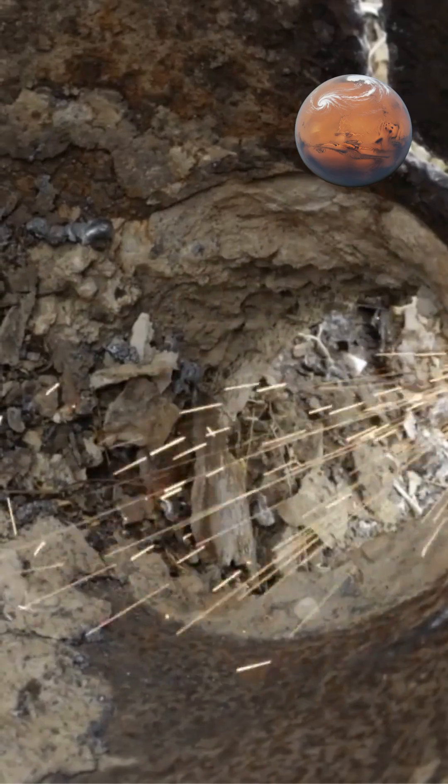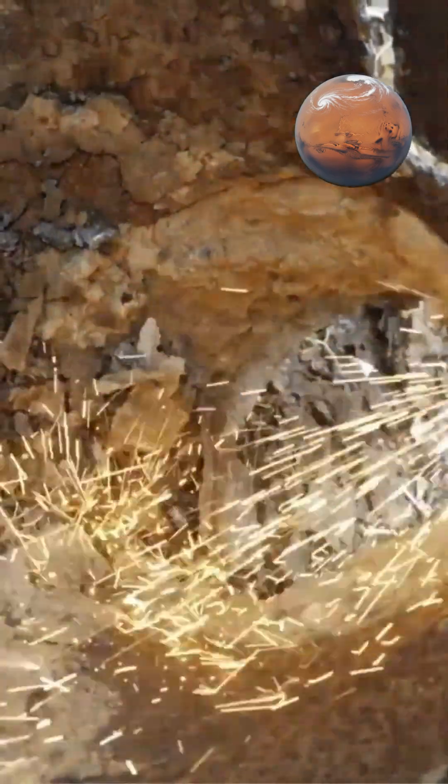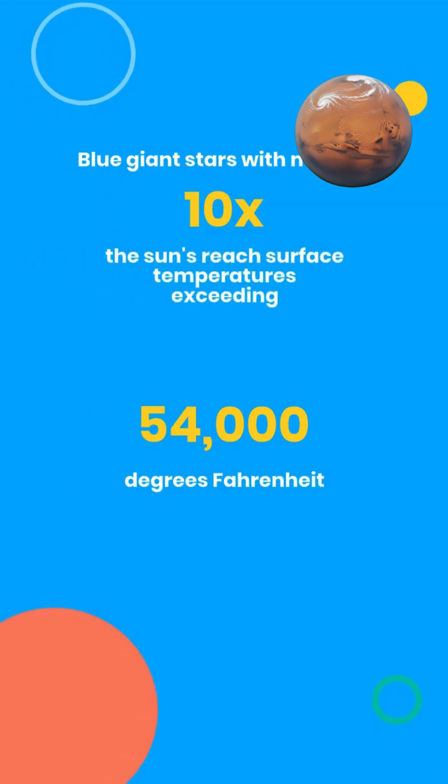This increased energy output heats the entire star, including its surface. Blue giant stars with masses ten times the sun's reach surface temperatures exceeding 54,000 degrees Fahrenheit.